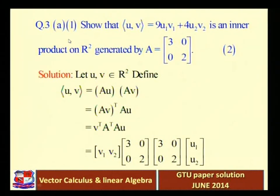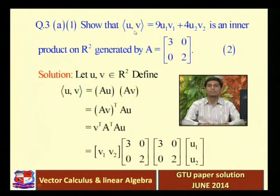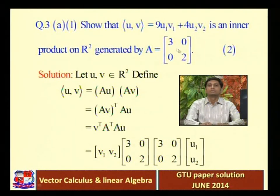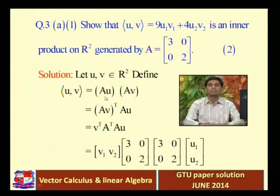Next is question 3a, first part: show that the inner product ⟨u, v⟩ = 9u₁v₁ + 4u₂v₂ is an inner product on R² generated by the matrix A = [[3, 0], [0, 2]]. Here is the solution: let u, v belong to R². Define the inner product ⟨u, v⟩ = Au · Av.